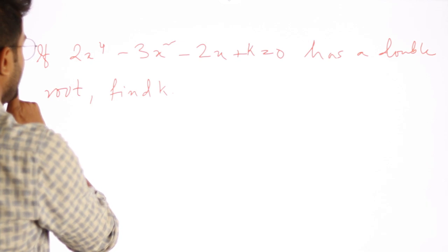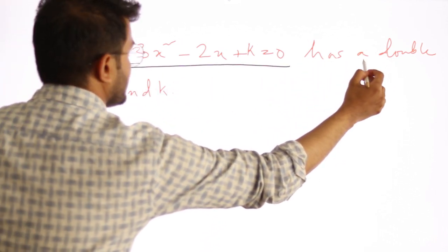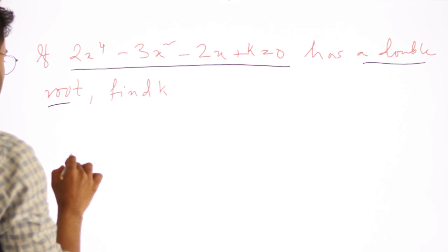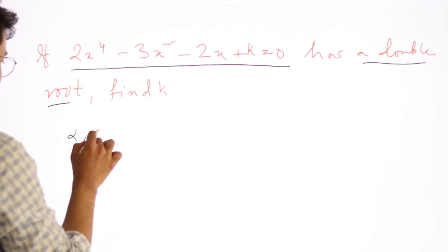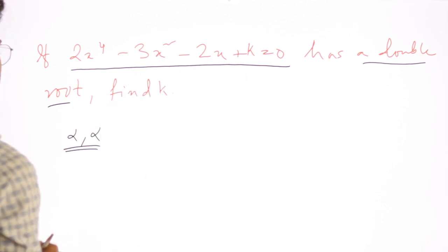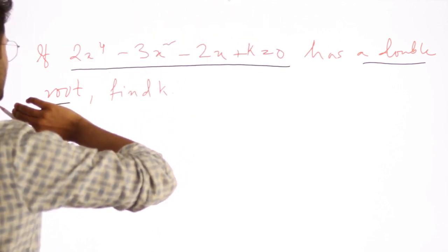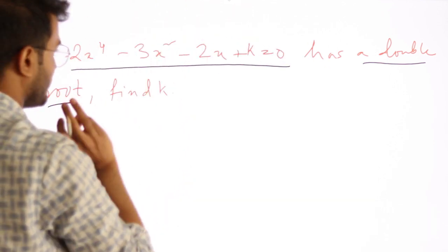The question is: if this equation has a double root, double root means repeated root, it occurs two times. It means alpha and alpha is the root. If double root is said, it means that one root is repeated.